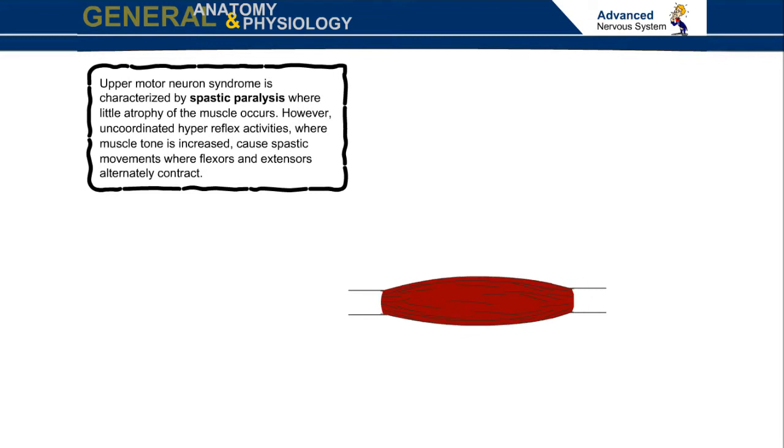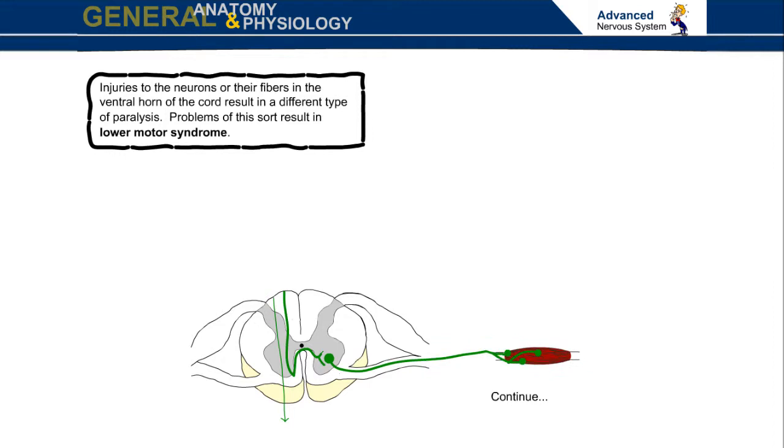Injuries to the neurons or fibers in the ventral horn of the cord result in a different type of paralysis. Problems of this sort result in lower motor neuron syndrome.